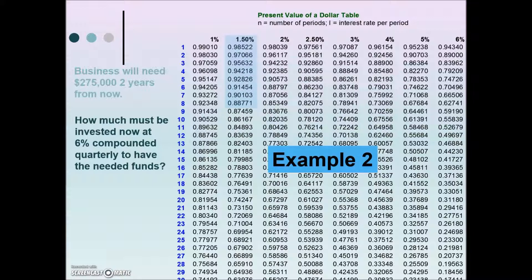We need to calculate our interest rate per compounding period. The interest rate is 6%, it's being compounded quarterly. If you take 6% divided by 4, we get the 1.5%. We next need to calculate how many compounding periods there will be. Quarterly means 4 per year times 2 years. 4 times 2 means we have an n value of 8.